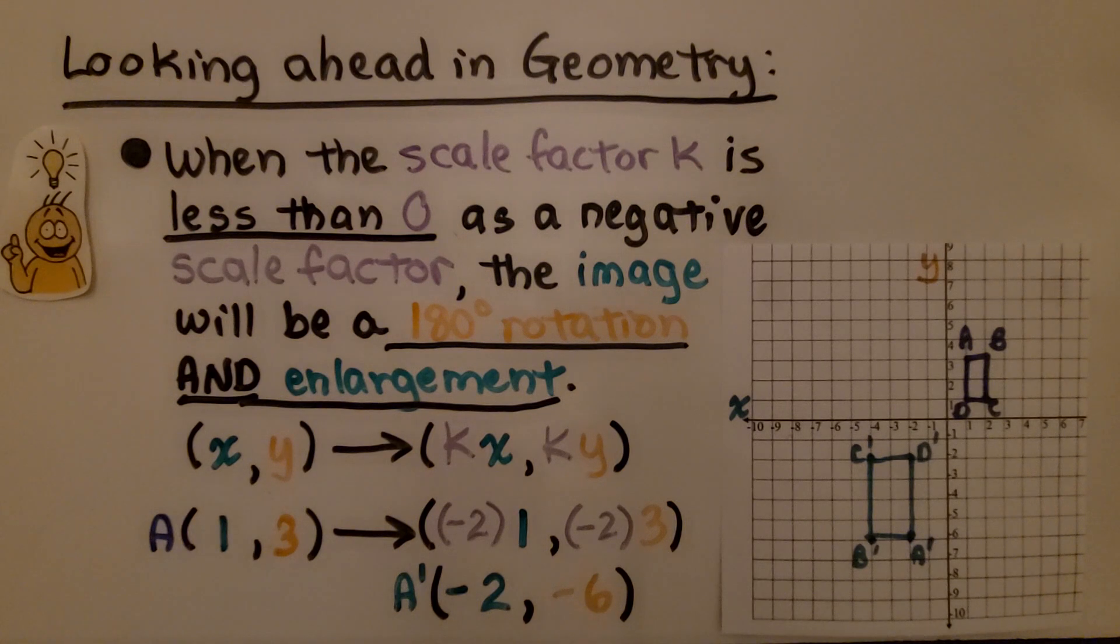So I wanted to show you something. This is looking ahead in geometry. We talked about when the scale factor k is between 0 and 1, then it's going to be a reduction. Well, when the scale factor k is less than 0 as a negative scale factor,